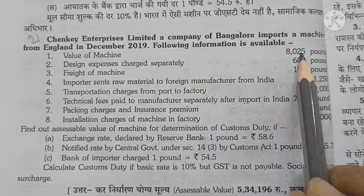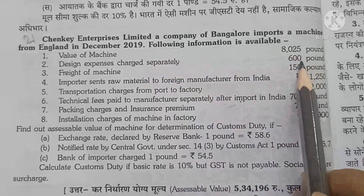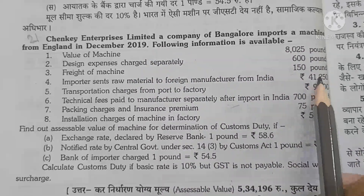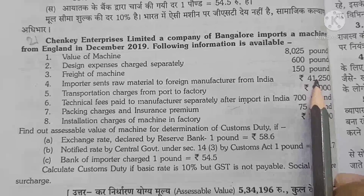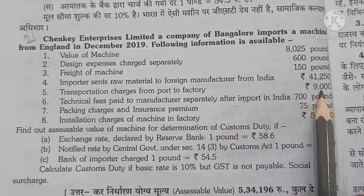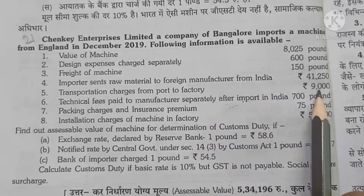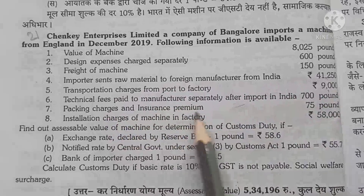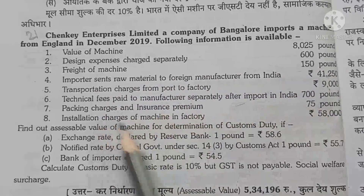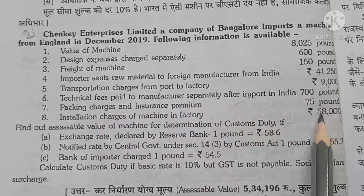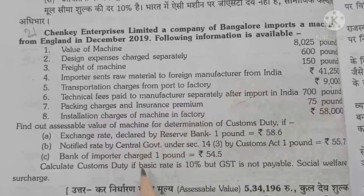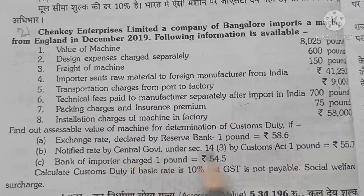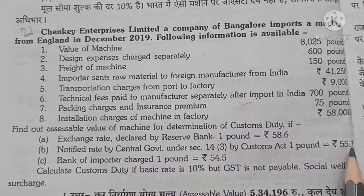Question number 21. Chenki Enterprises have imported some goods from England. Value of machine is $8,025, designing expense is $600, price of machine freight is $150. The importer has sent raw materials to the foreign manufacturer, which have been valued at ₹41,250. Transportation and installation charges are from India, so we will not calculate these. Packaging charge and insurance premium is $75.